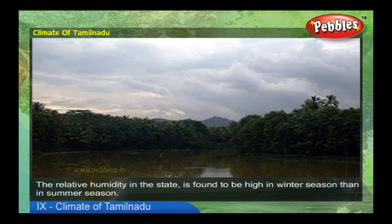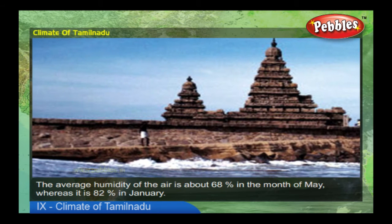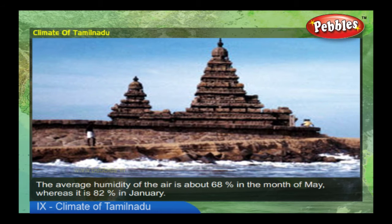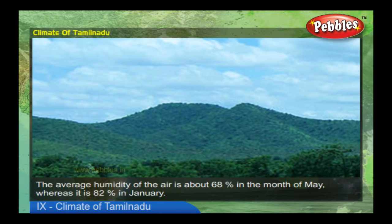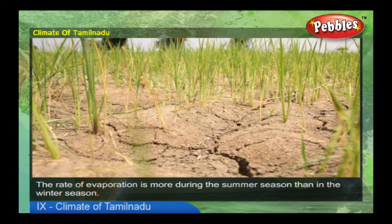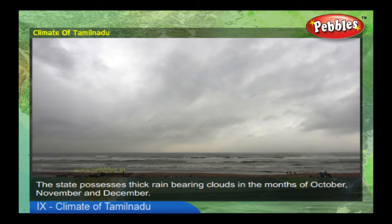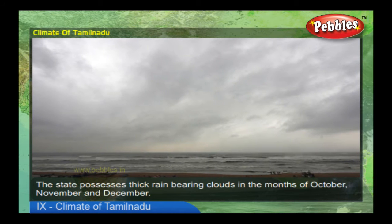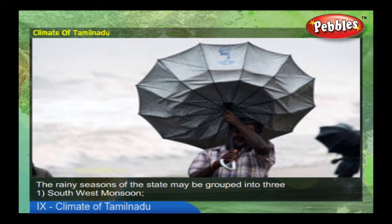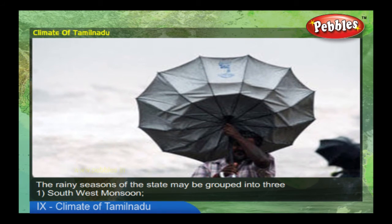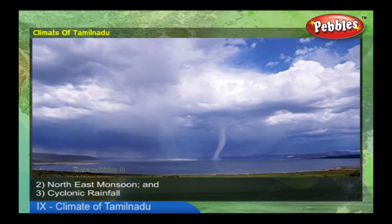The relative humidity in the state is found to be higher in winter than in summer. The average humidity of the air is about 68 percent in May, whereas it is 82 percent in January. The rate of evaporation is greater during summer than in winter. The state possesses thick rain-bearing clouds in the months of October, November, and December. The rainy seasons may be grouped into three: southwest monsoon, northeast monsoon, and cyclonic rainfall.